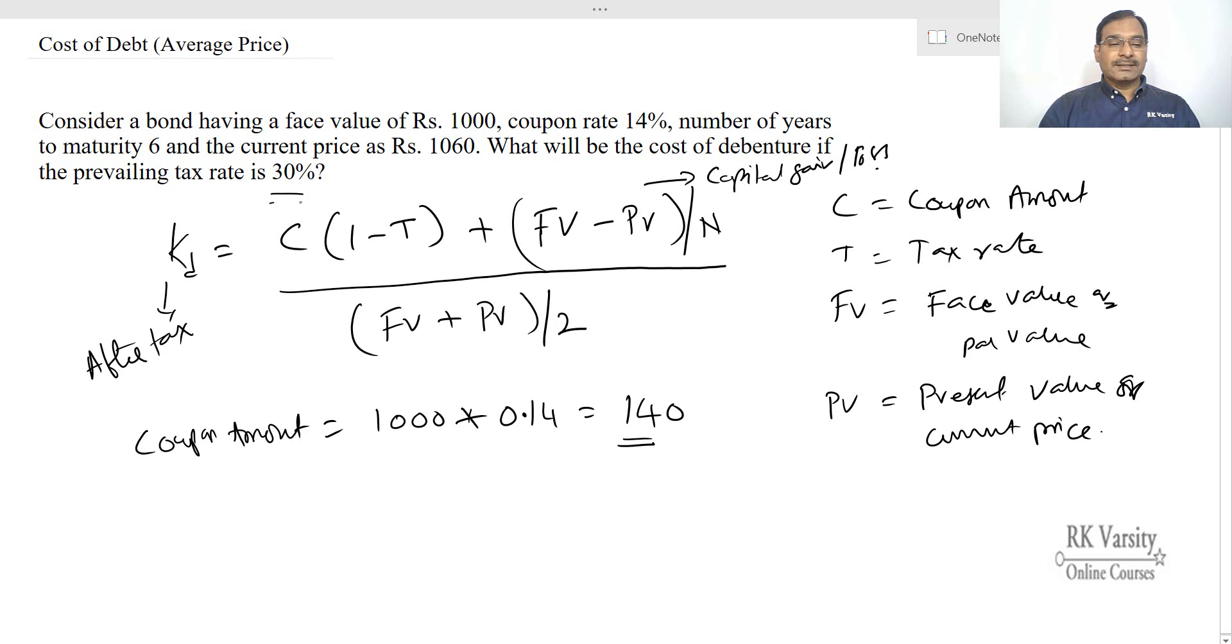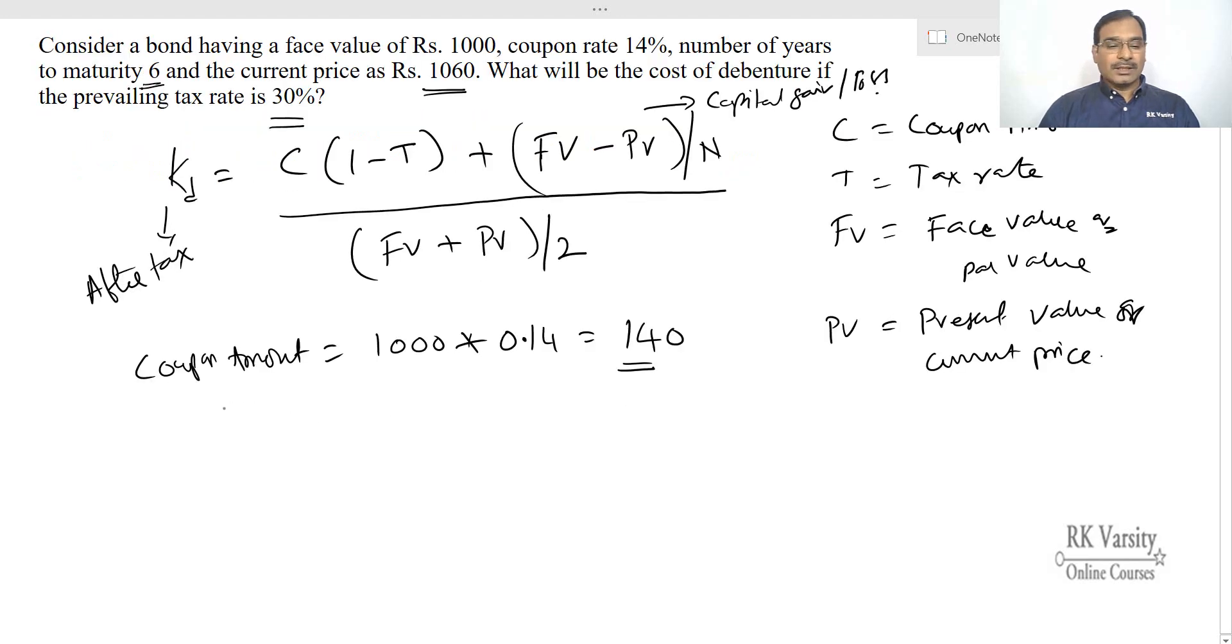The tax rate is 30 percent, current price of the bond is 1060, and maturity is six years. So our par value or face value equals 1000, then present value equals 1060 rupees, n is 6 years, and tax rate T is 30 percent.